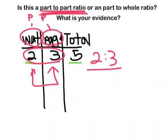Now we know that 2 to 3, which is water, eggs, it's a part-to-part ratio. But what would be an example of a part-to-whole ratio?